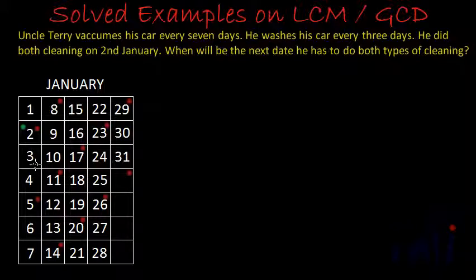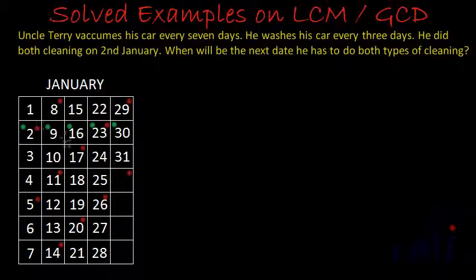I am putting green dots now. Next he will vacuum after 7 days, that means on 9th — 2 plus 7 equals 9. Next he will vacuum on 16th, then on 23rd, and after that on 30th. So on 2nd he has done both types of cleanings — vacuumed as well as washed his car. And the next time he does both types of cleaning on the same day is 23rd of January.